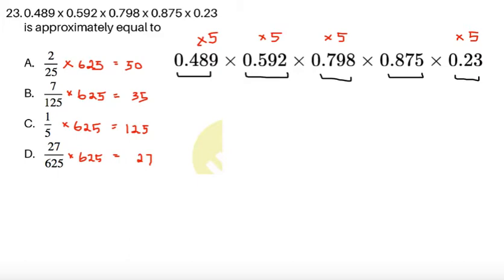For the next item, 23, this product of ugly decimals is approximately equal to one of these four. It's very difficult to check fractions, so let us multiply by the LCD, which is 625 in this case, and we can easily compare whole numbers afterwards. So 2 over 25 times 625. The 25 and the 625 will cancel. In fact, 625 is 25 squared, so it becomes 2 times 25, which gives 50.